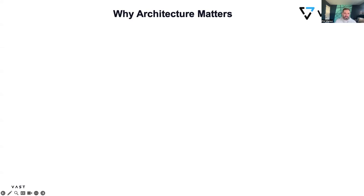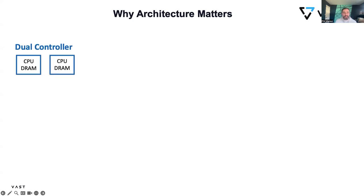To set the table, we're going to start with a quick introduction to the two main architectures you're going to see in the unstructured data space. The first is the dual controller architecture, really pioneered by NetApp over 30 years ago. I've got a couple of controllers with some CPU and memory and then a shared pool of disks — they both see the same disk. The main benefit is this is a really simple architecture to build and manage. The challenge is I can only put so much capacity behind a couple of controllers.